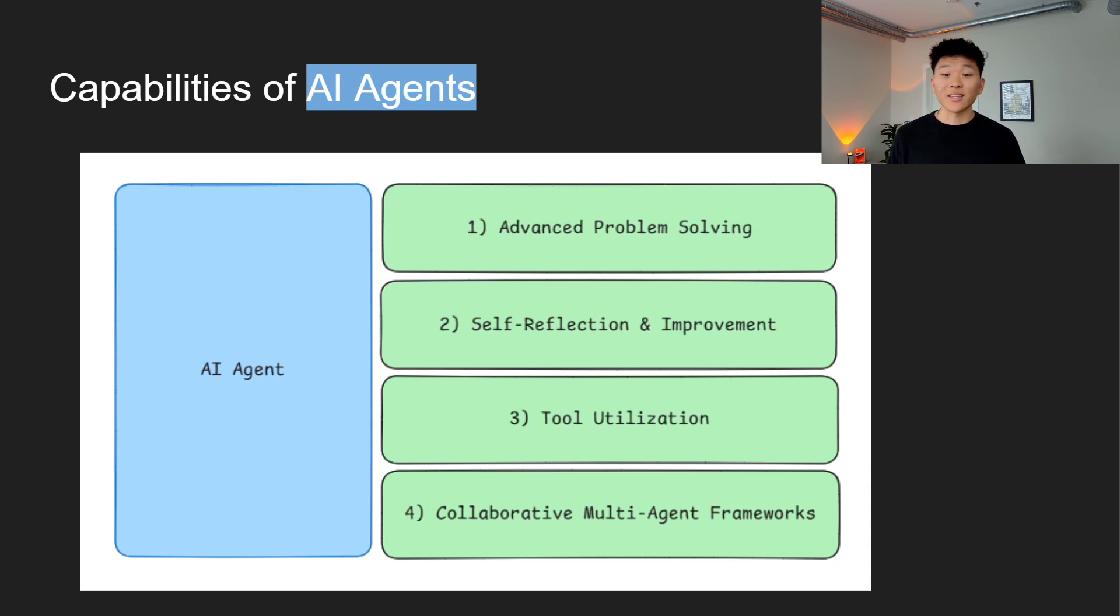Then we have tool utilization. Obviously tools are what give the agents the power to act, and they use them in smarter ways than you may originally think. Once you hook up different tools to an agent and define what each tool does, they're able to decide which ones they want to use and in what order. Obviously, as the use case gets more complex, you're going to have to work in some more structured prompting, but these agents are genuinely pretty good at understanding how to conduct themselves when they're given a role and an incoming query.